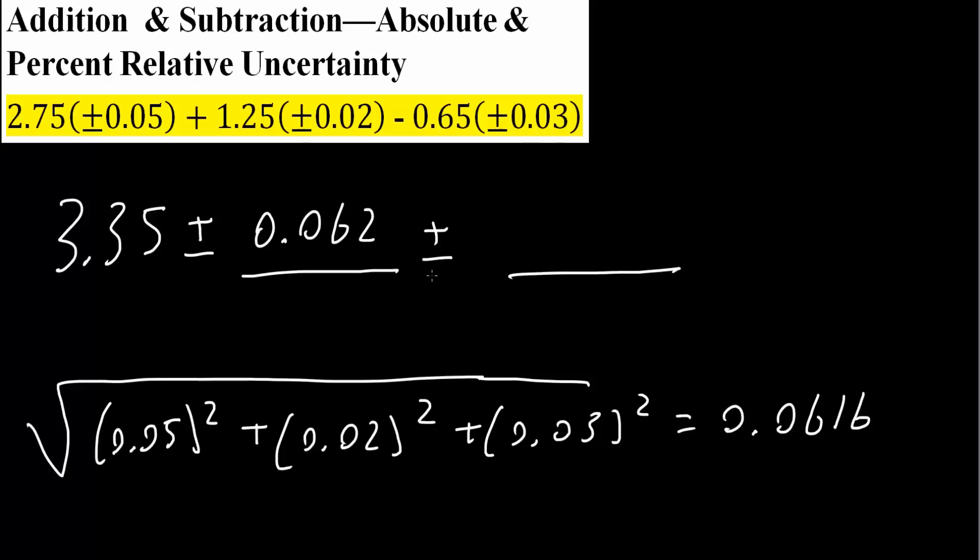Next, we will get the percent relative uncertainty. Now once we get the absolute uncertainty, it's fairly easy.